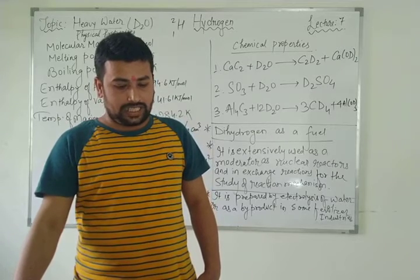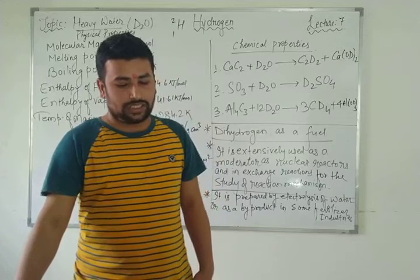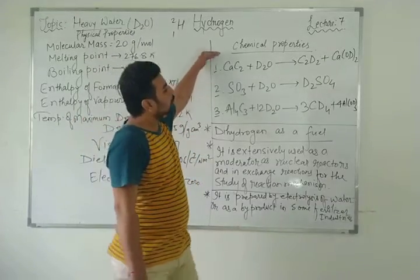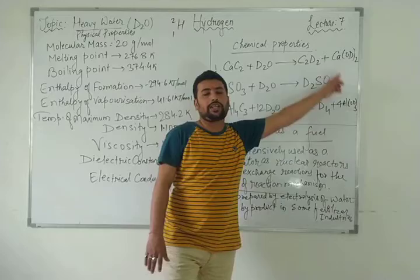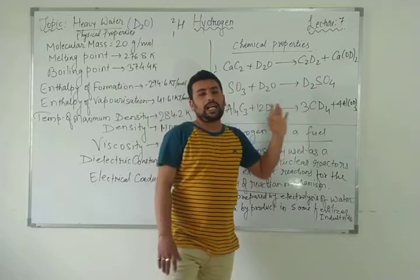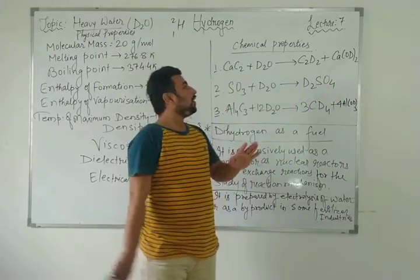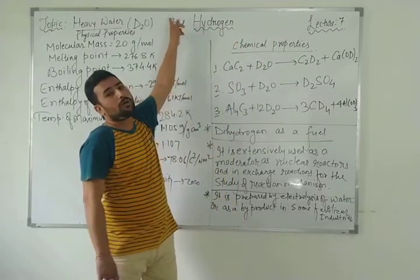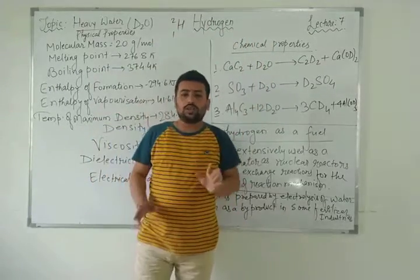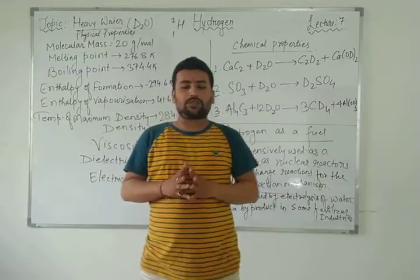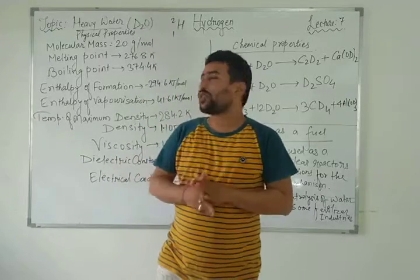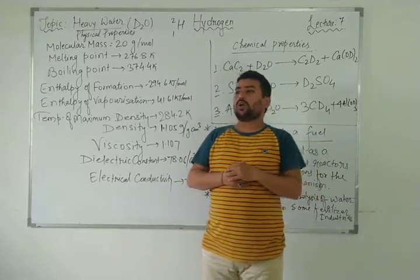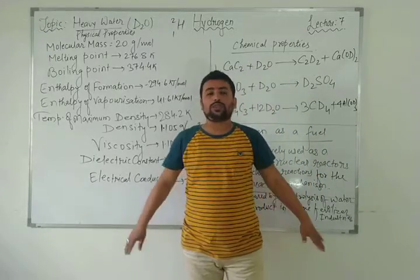Generally, only chemical reaction-related questions will be asked. Remember the complete chemical reaction — balanced equations and products should be memorized. D₂ means deuterium, with atomic mass 2. Chemical reaction questions are the main ones from this heavy water topic. This was our last topic of the hydrogen chapter.